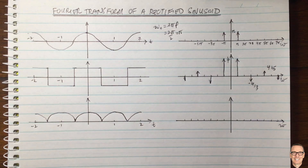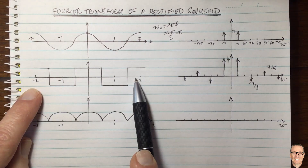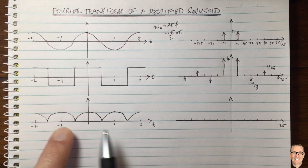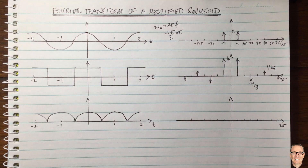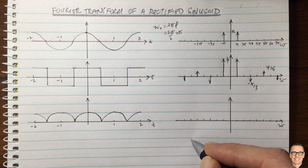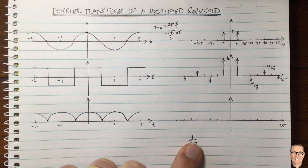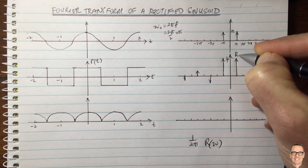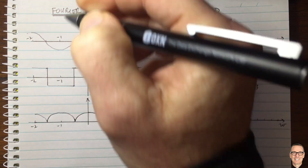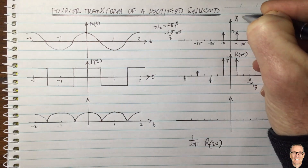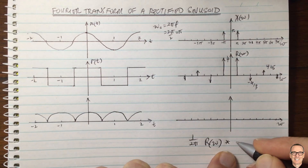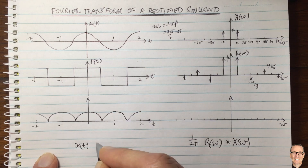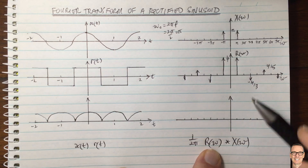Another property of Fourier transforms is that if you multiply in one domain, you convolve in the other domain. Here we're multiplying in the time domain, so to get the Fourier transform of the rectified signal we need to convolve in the frequency domain. The overall answer has a scaling factor of 1/2pi because we're working in radial frequency. So we have the Fourier transform of the square wave R(omega) convolved with the Fourier transform of the cosine X(omega).